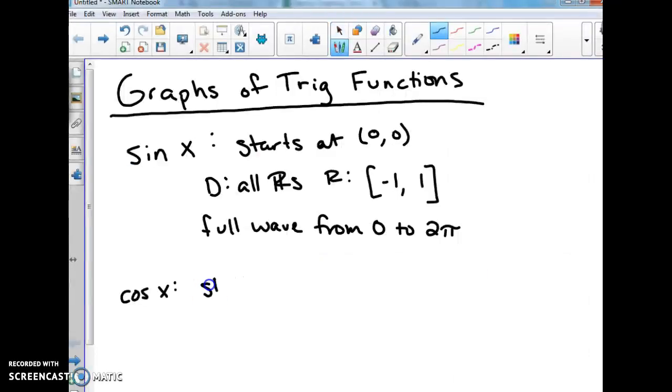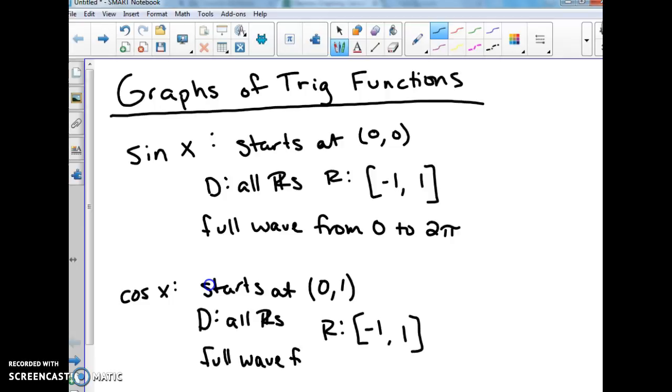So, starts at (0,1). Domain is still all real numbers. Our range is still that negative 1 to 1. And our full wave, again, is still from 0 to 2π. And again, these are all based off of the values that are based on our unit circle.